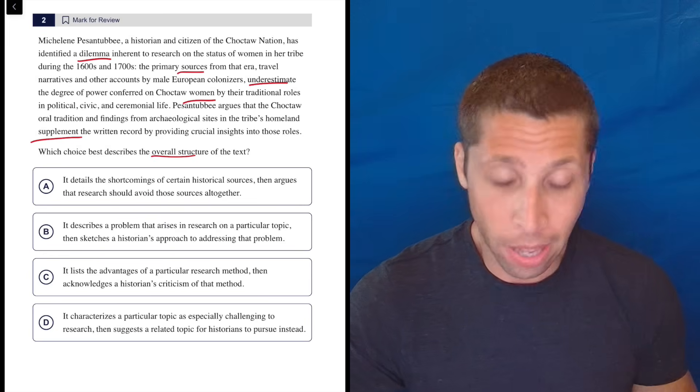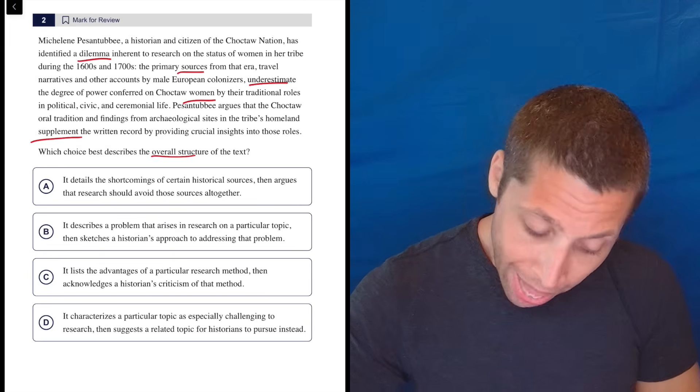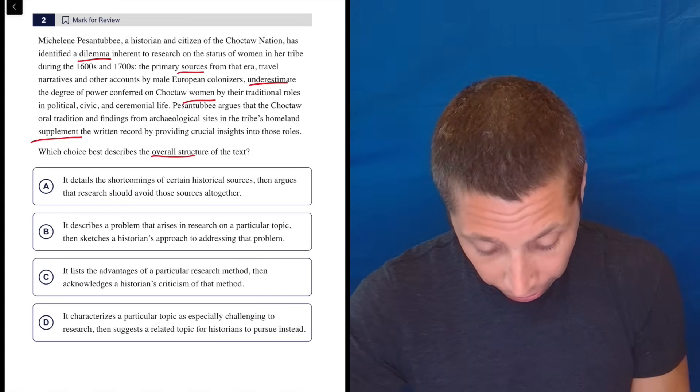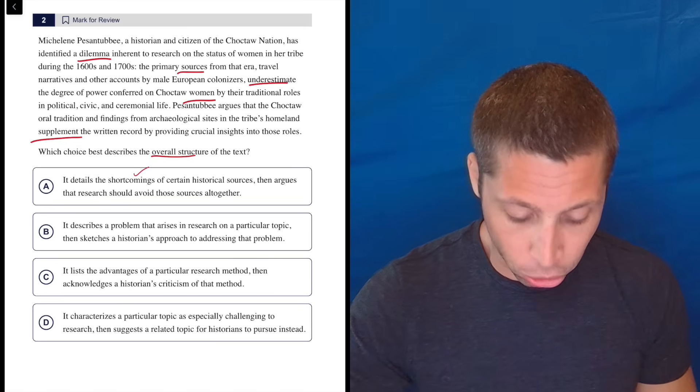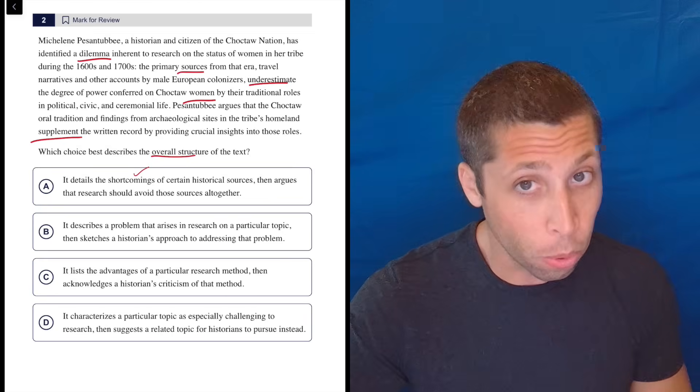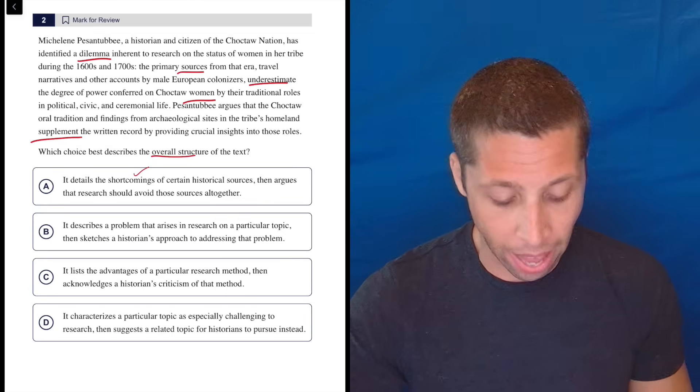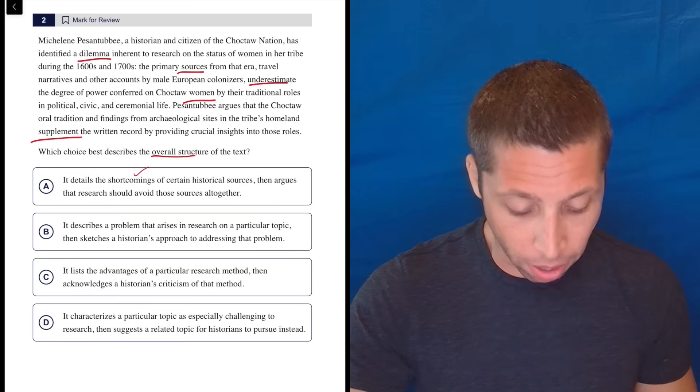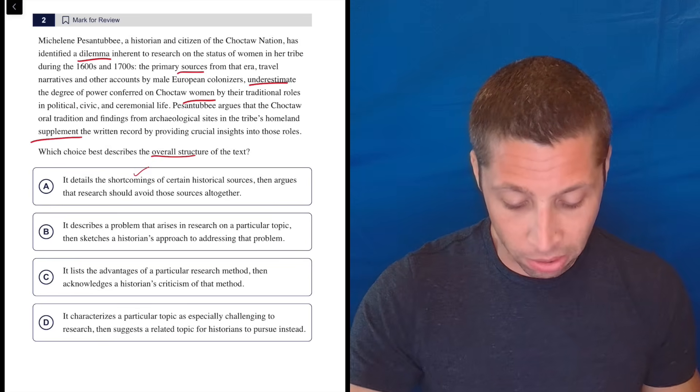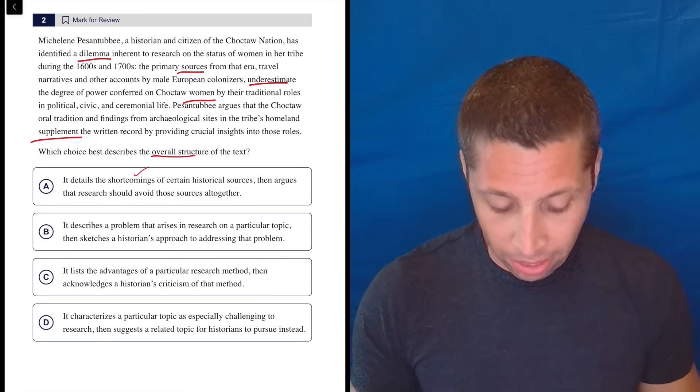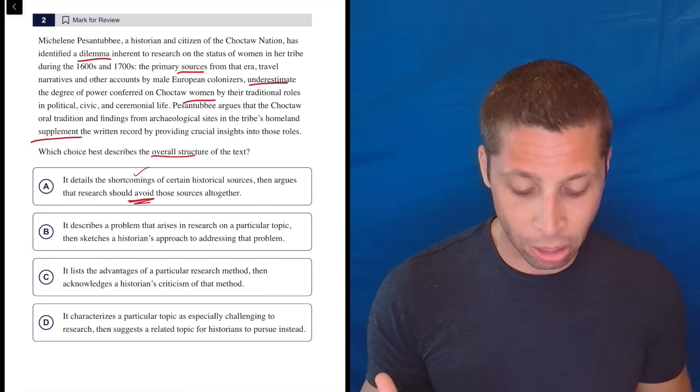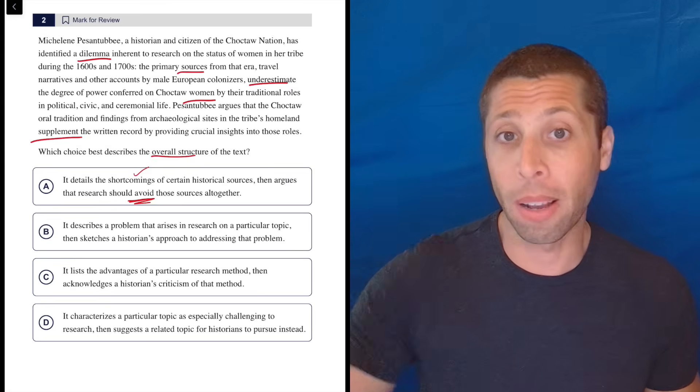So, okay, let's see what they say. A, the overall structure details the shortcomings of certain historical sources. Sure, okay, I like that. Then argues that research should avoid those sources. No, it does not say that. The first part is 100% correct. It definitely details the shortcomings of the primary sources, because they're written by men. But then the second part is not right.